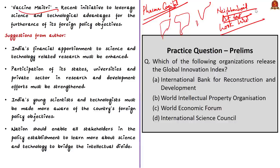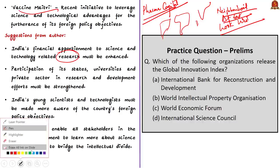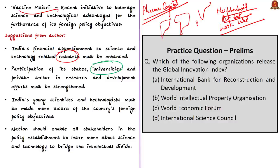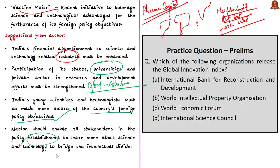India still lags behind China and many Western countries in S&T research. The solutions given by the author: first, India's financial share in S&T research must rise. Second, participation of India's states, universities, and private sector in R&D must be strengthened — for example, in India most vaccines are developed only by Pharma companies, whereas Oxford University and AstraZeneca came together. Third, India's young scientists and technologists should be made more aware of the country's foreign policy objectives. Finally, all stakeholders in the policy establishment should learn more about science and technology to bridge the intellectual divide.